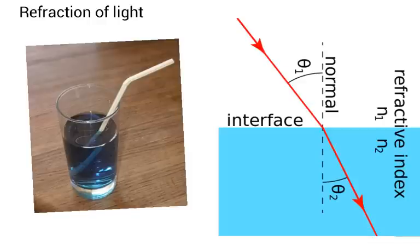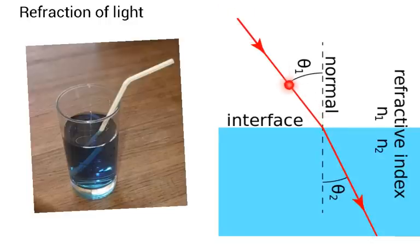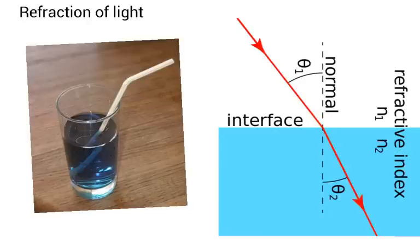Next up we're talking about refraction. Refraction occurs when light moves from one medium to another and the light is bent. Here you can see a picture of a straw inside a glass — it appears like the straw is bent, but what has happened is the light coming from the straw passes through the liquid from the liquid to the air and as it does so it changes direction. We've got our normal line here — the normal line is 90 degrees to the boundary, which is the interface where the two materials meet. If the material the light is going into is more dense than the material it's leaving, the light will bend towards the normal.